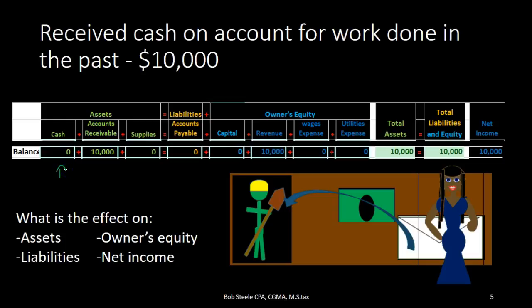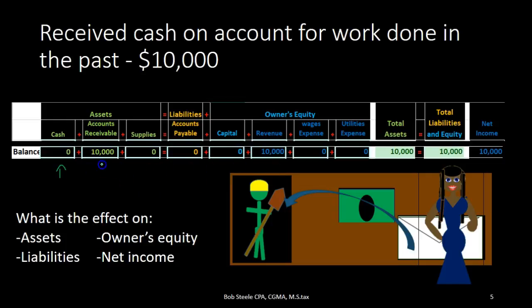What's the other side? Why are people paying us cash? You might say because we earned it, and therefore think we should record that to revenue — but we can already see that revenue already has that $10,000 in it. We already recorded it to revenue when we earned it, under the revenue recognition principle. Therefore, what really happens is we need to bring down the IOU account, which is the accounts receivable account.